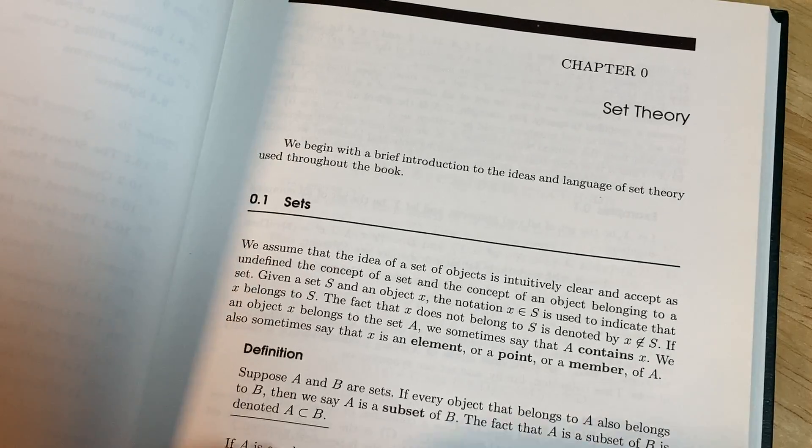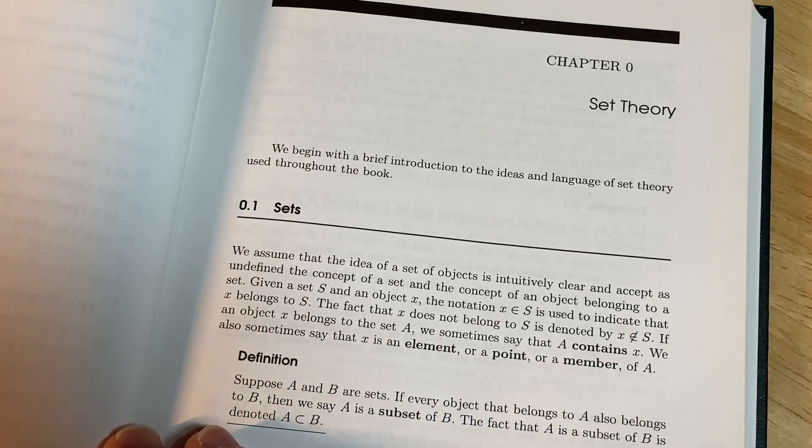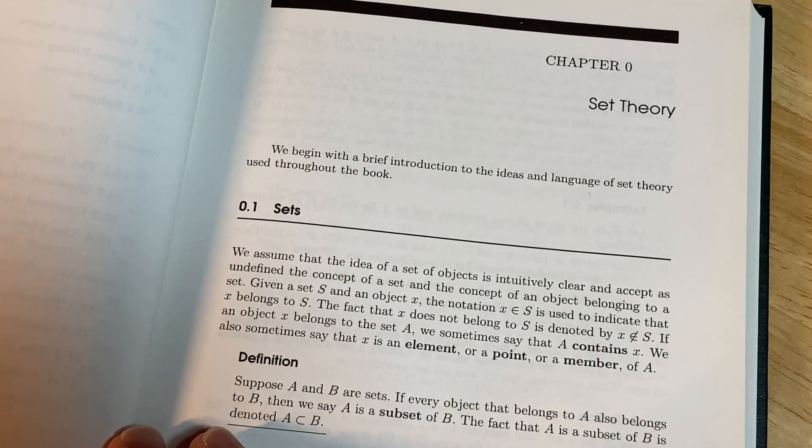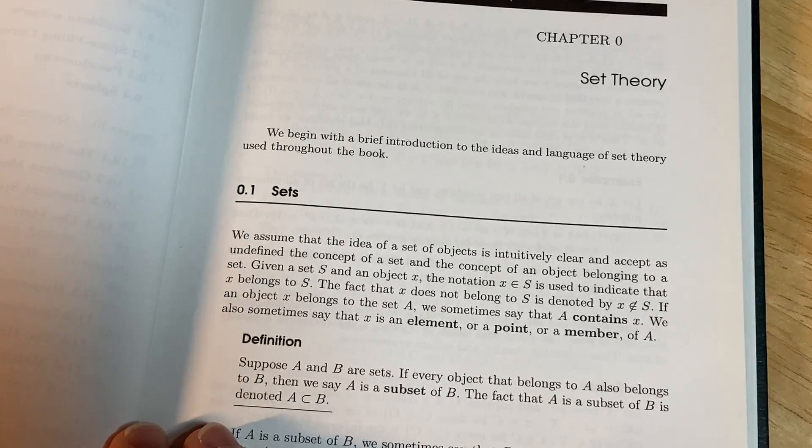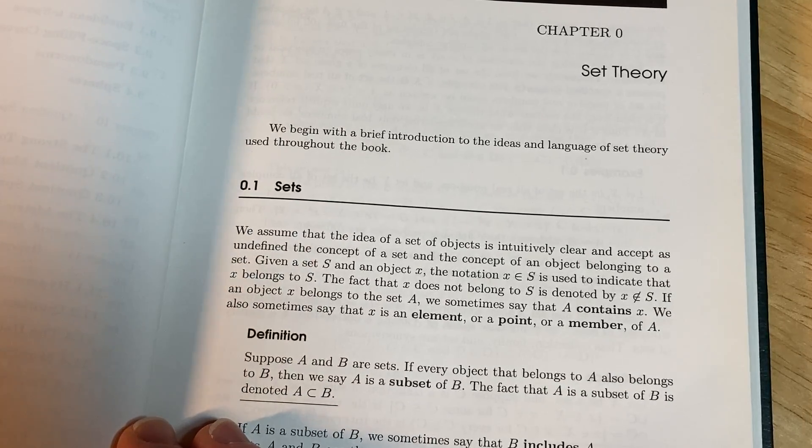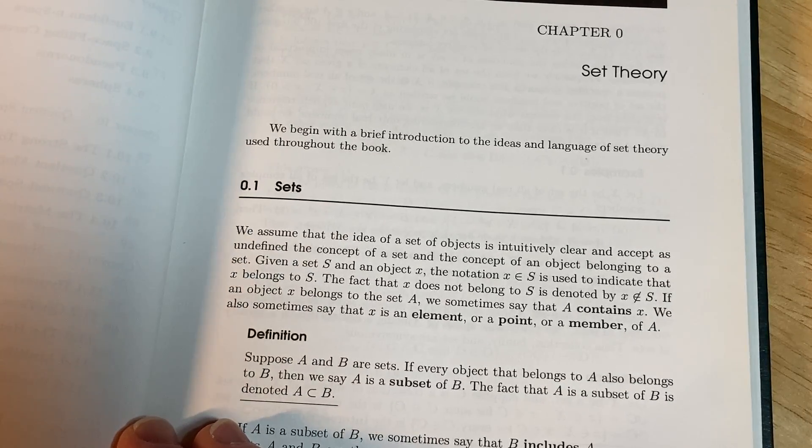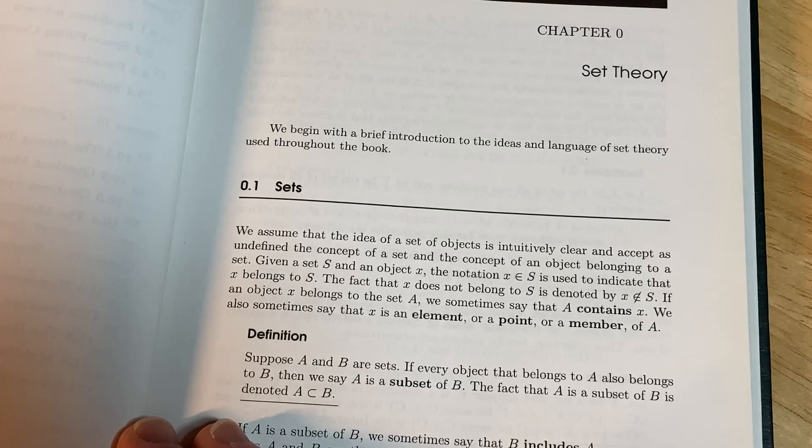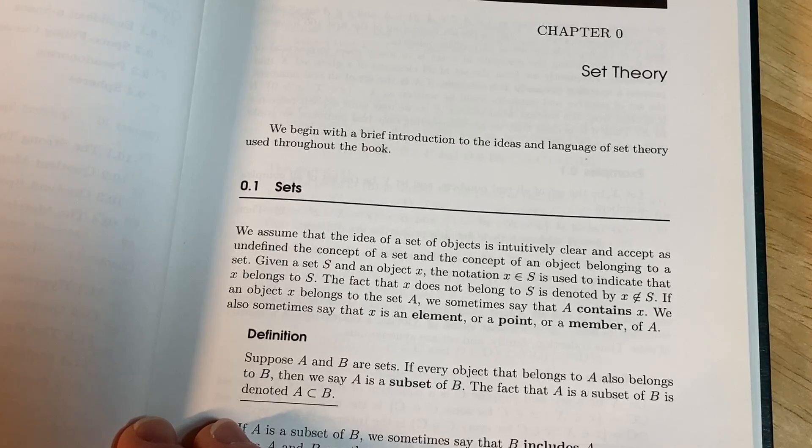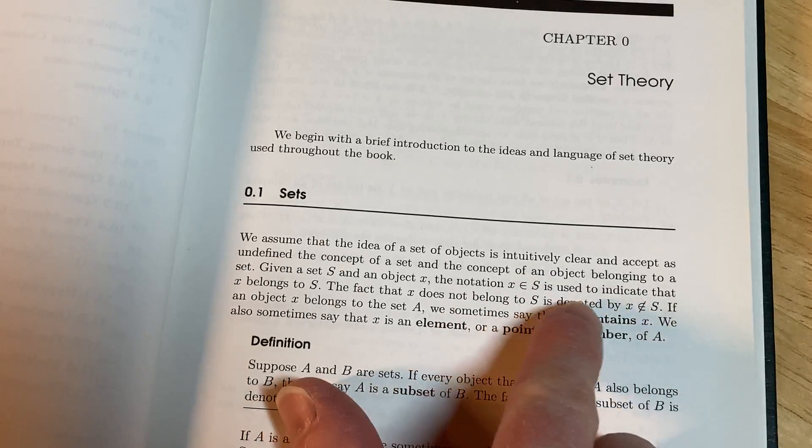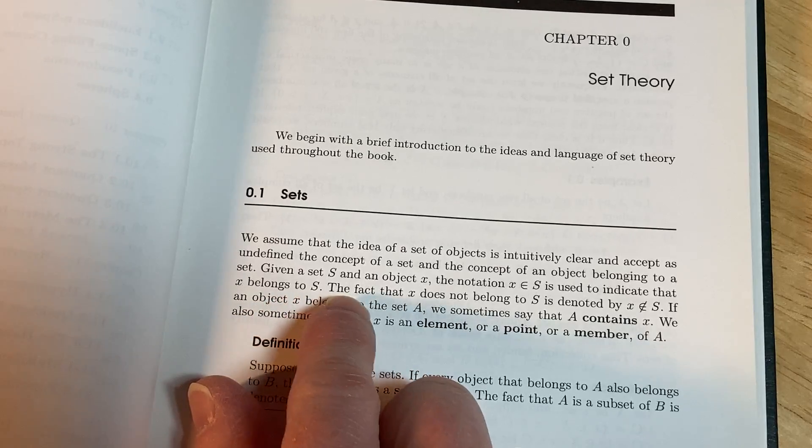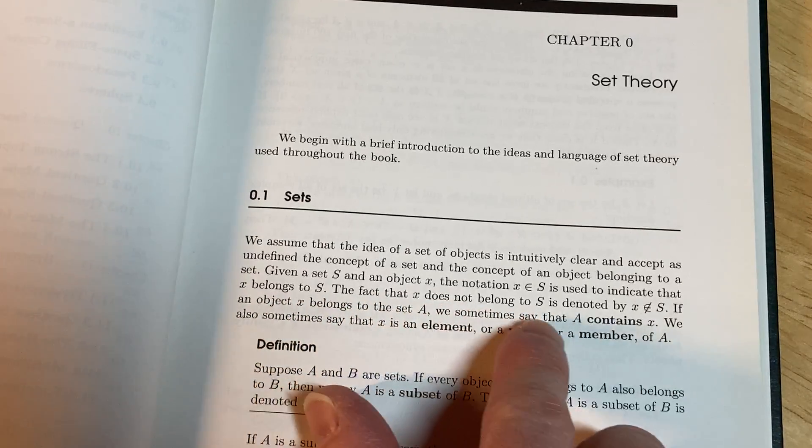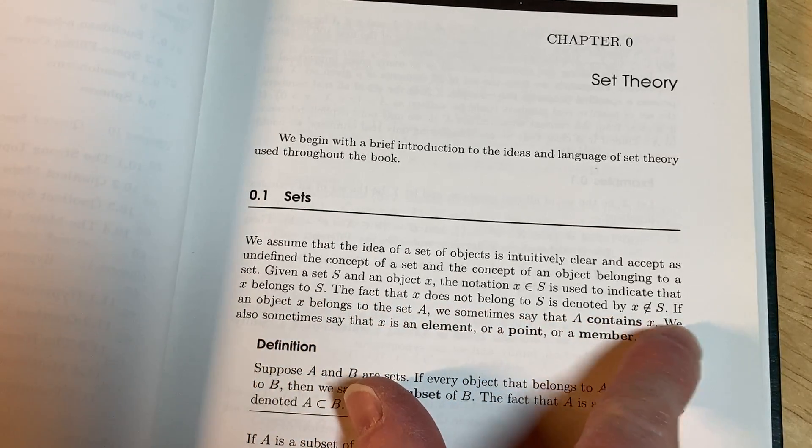Set theory, chapter zero. We begin with a brief introduction to the ideas and language of set theory used throughout the book. Sets. We assume that the idea of a set of objects is intuitively clear and accept as undefined the concept of a set and the concept of an object belonging to a set. Given a set S and an object X, the notation X is in S is used to indicate that X belongs to S. The fact that X does not belong to S is denoted by X not in S.